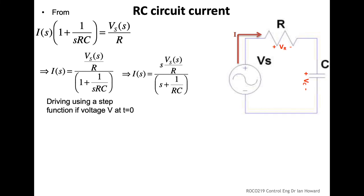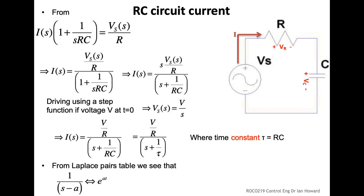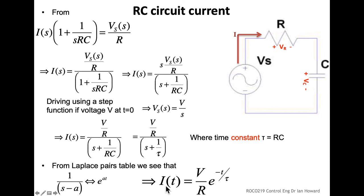Driving with a voltage step V at t=0, the Laplace transform of the driving function is V/s. Multiplying through by that effectively removes the s and inserts V. In the resulting expression, we see a scaling factor V/R, and the 'a' term in the 1/(s - a) form corresponds to minus 1/tau. So the current is given by (V/R) times this exponential decay.